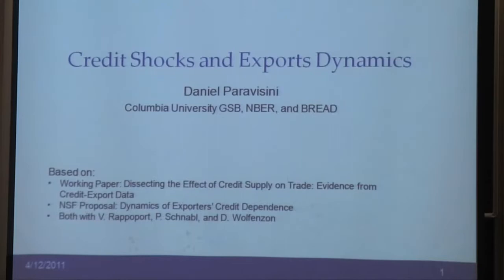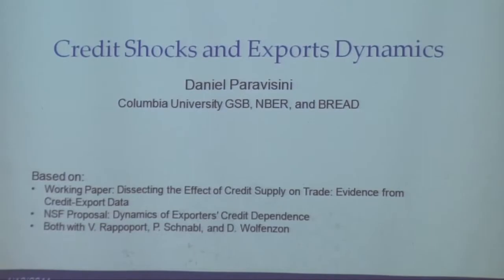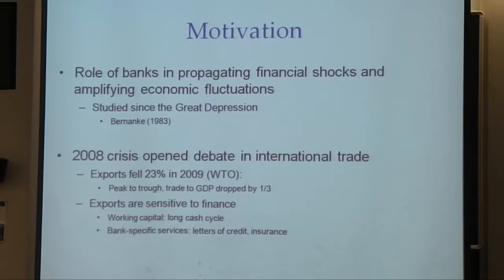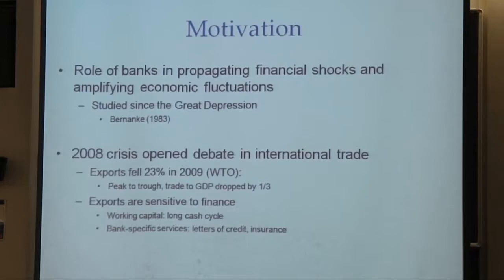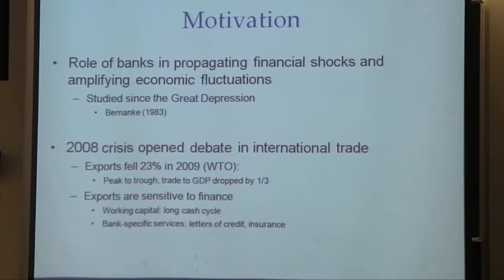I'm going to present bits and pieces of different parts of this research. The motivation comes from the combination of an old question in finance and some new patterns in trade observed during the financial crisis. The old question asks what is the role of banks in propagating financial shocks and amplifying economic fluctuations. During an economic downturn, asset prices get affected, default rates go up, and the balance sheets of banks suffer. As a result, the ability of banks to issue loans is reduced. Firms that are bank dependent feel credit constrained, their output suffers, and that ends up aggravating the economic downturn.